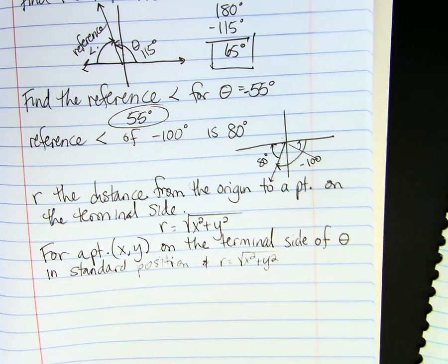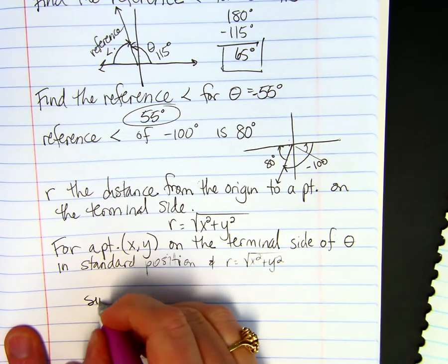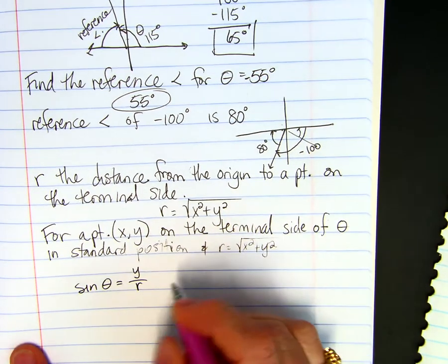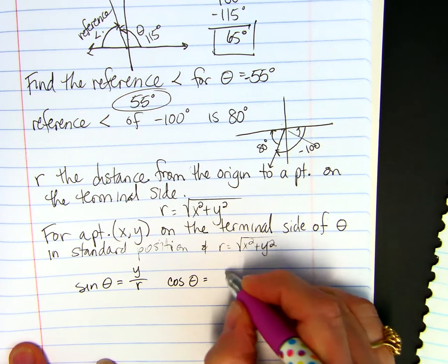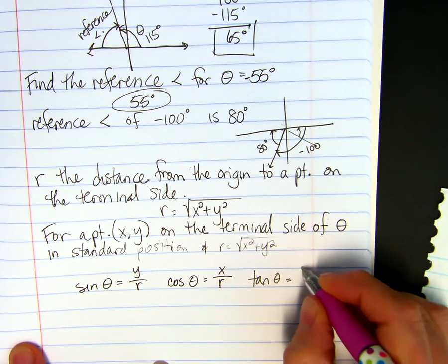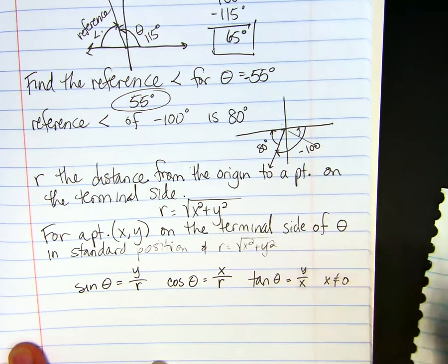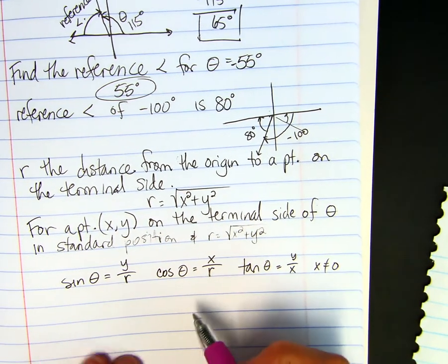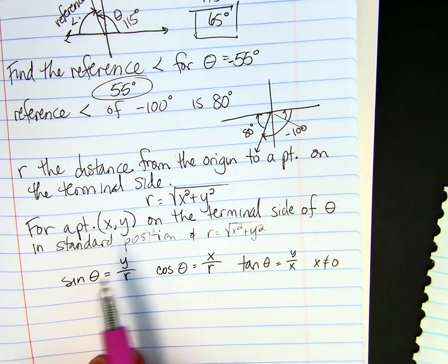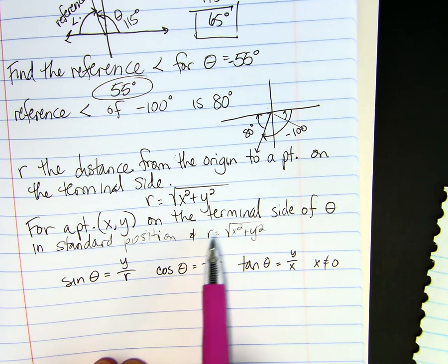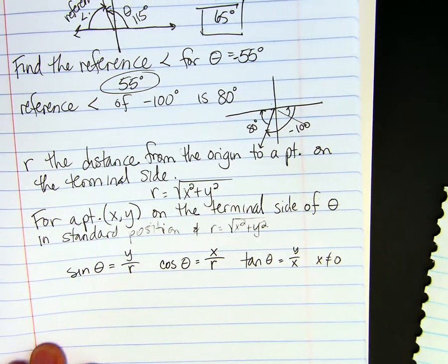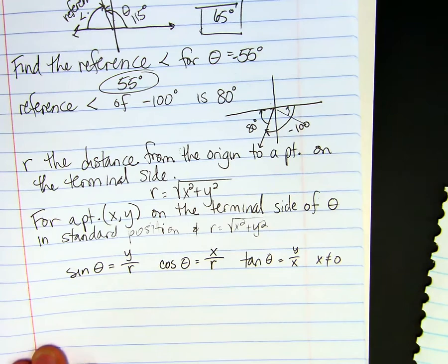If you have, for a point x, y, on the terminal side of theta, that's your angle, in standard position, and R equals root x squared plus y squared. The sine of theta is y divided by R. The cosine of theta is x divided by R. And the tangent of theta is y over x, as long as x does not equal zero. So if you know the point, you can find the sine, the cosine, the tangent. You can find R. We're going to do an example, finding trig functions when you know a point.